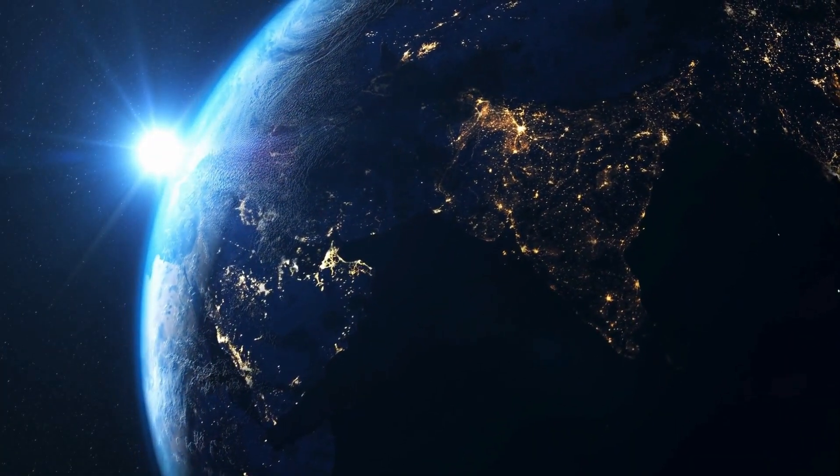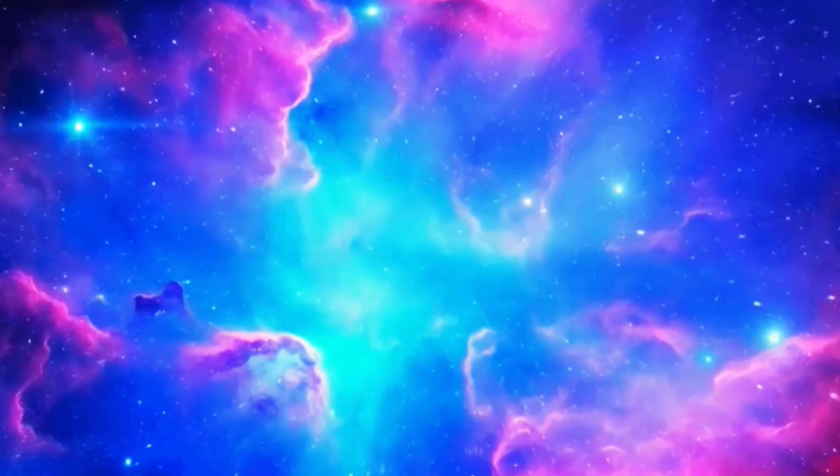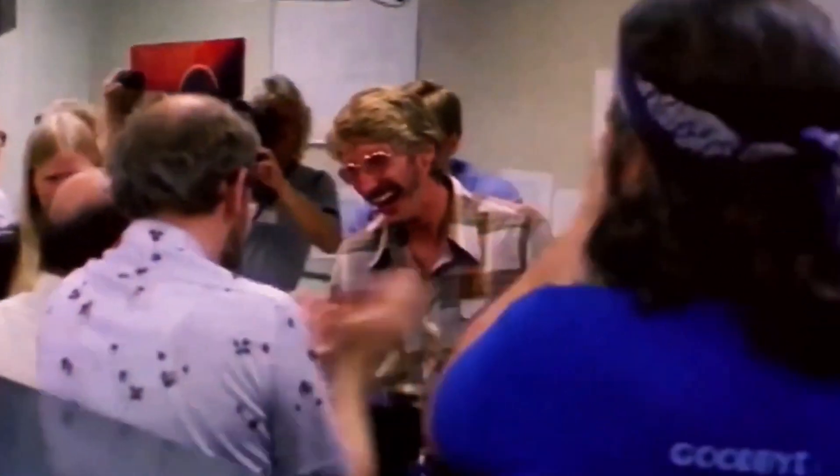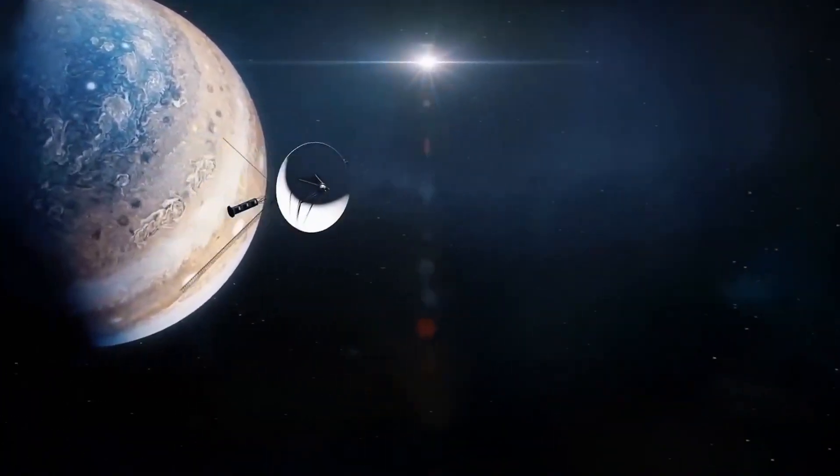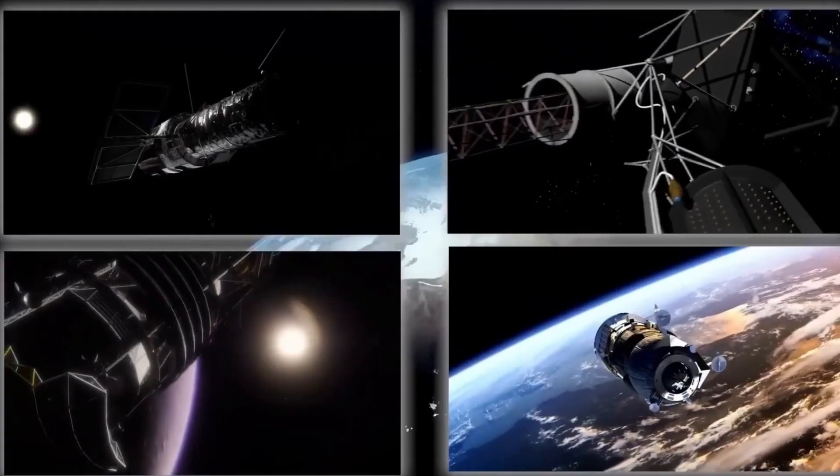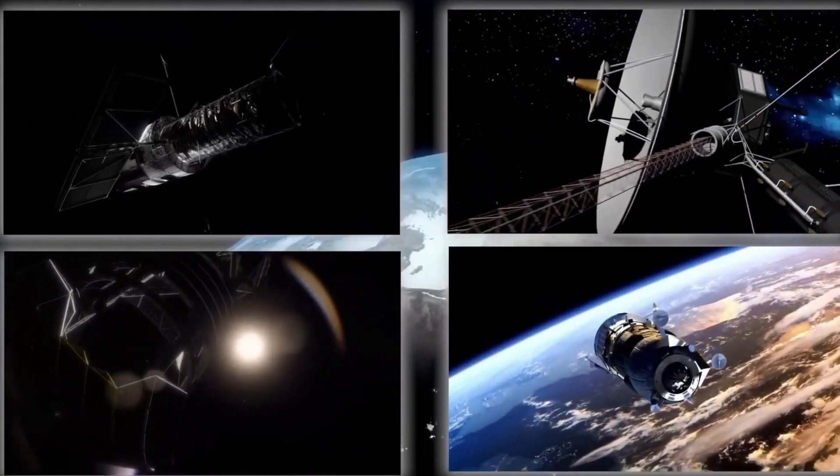In 1990, Voyager 1 took its iconic Pale Blue Dot image, capturing Earth as a tiny speck in the vastness of space from 3.7 billion miles away. This image, taken at the request of Carl Sagan, highlighted the fragility and smallness of our planet, evoking a profound sense of humility and perspective on our place in the universe.